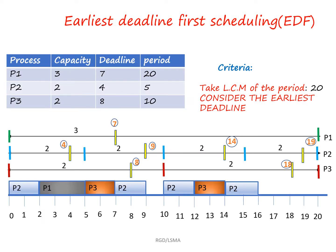If you look at this table, we have three processes: P1, P2, and P3. P1 has a deadline of 7 and has to execute 3 times over a period of 20. P2 has to execute 2 times before deadline 4, for every 5-unit interval. P3 has to execute 2 times before deadline 8, for a period of 10.